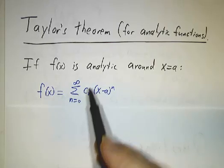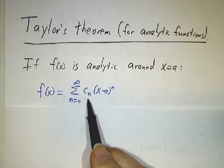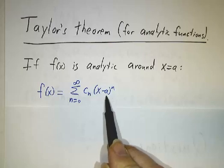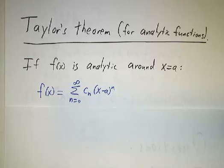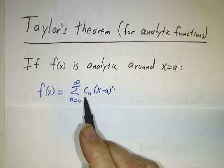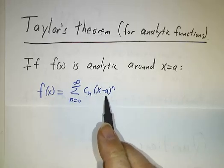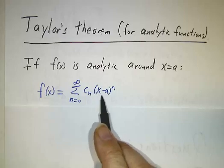by the way, you may have noticed that I'm calling the coefficient cn basically because a is the point that you're expanding around, and so I don't want to call it an. But whatever name you give to the coefficients, if you can write it as an infinite power series, we're expanding in powers of x minus a,